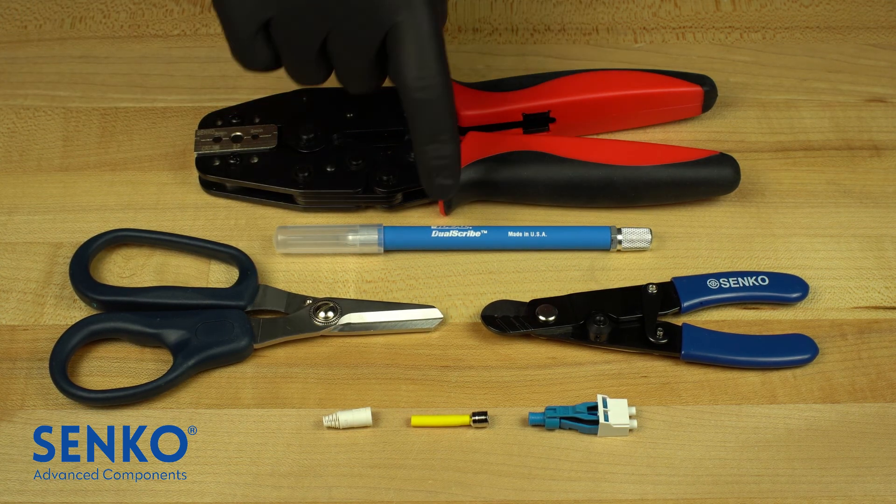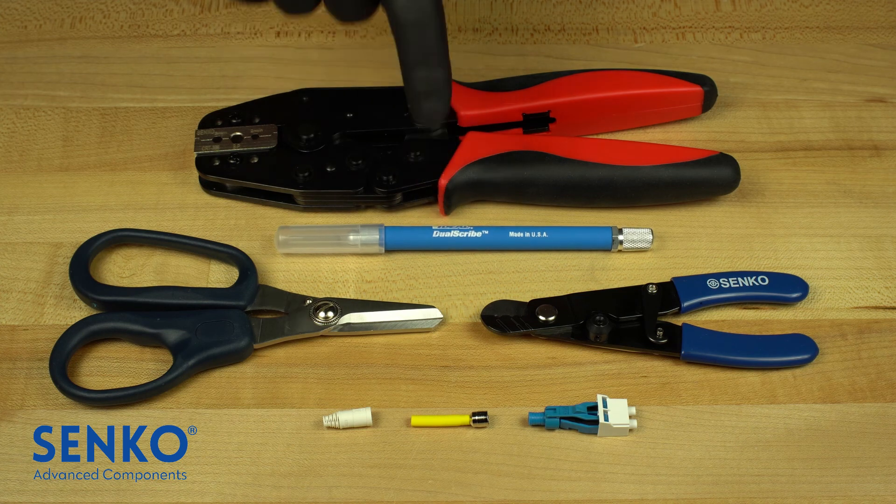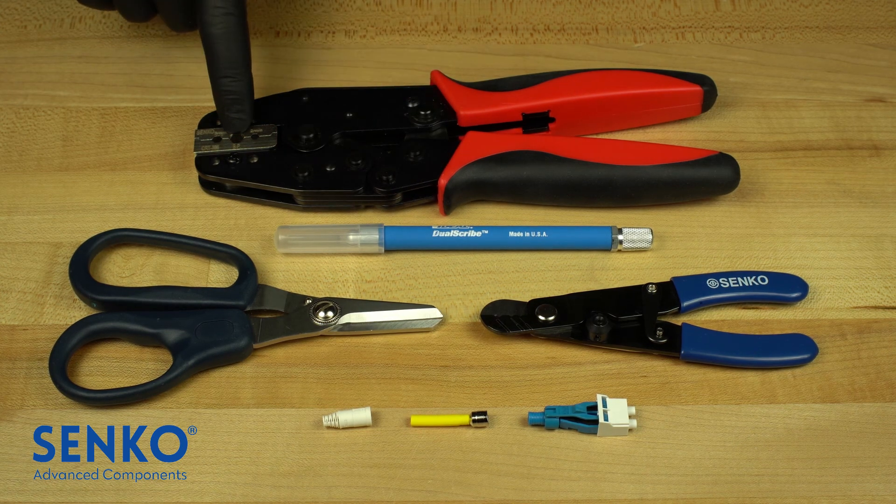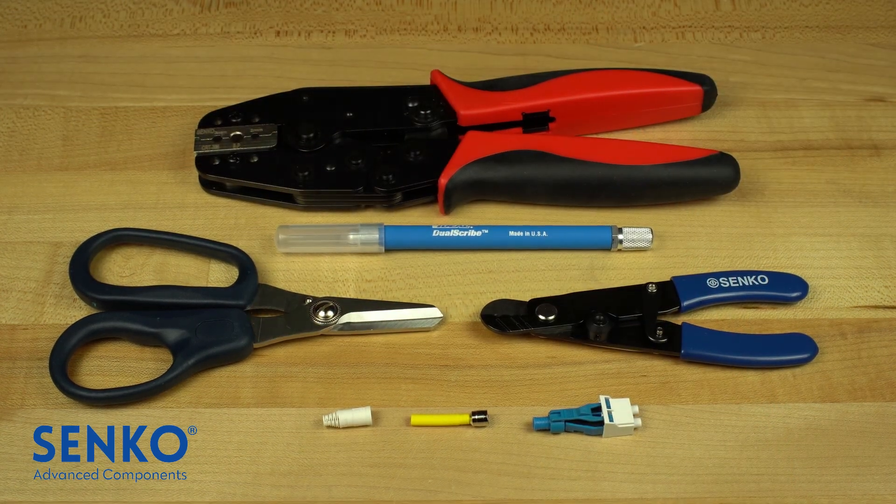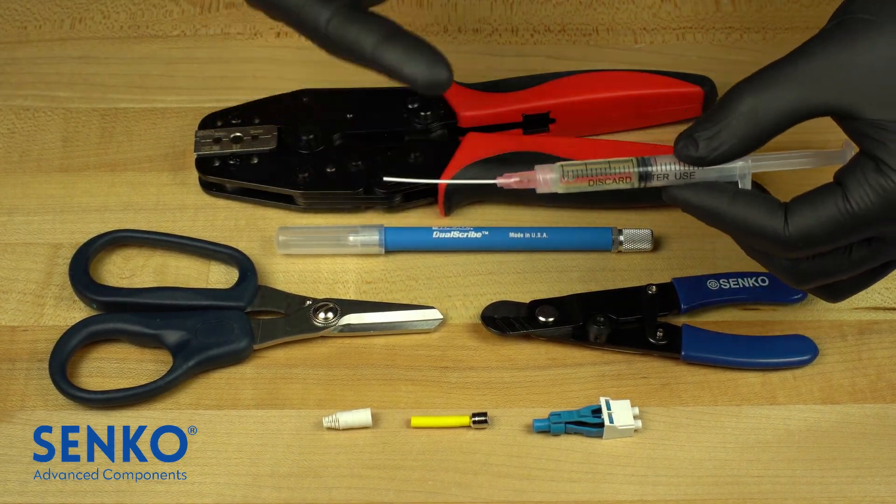a cleave scribe if necessary, crimp tool CRT708, a heat gun, and a 20-21 gauge flexible syringe tip.